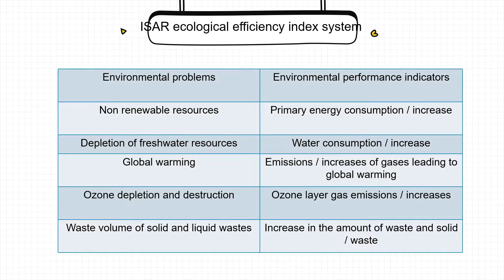Environmental performance assessment also includes E-efficiency indicators — the ratio of environmental performance variables to financial performance variables. Through the assessment of environmental load, managers can set environmental governance goals, put forward process improvement plans, and use these as indicators for operation and management. It is one of the important tools to support enterprise decision-making and provides a method for comparing the environmental load of different enterprise production processes.